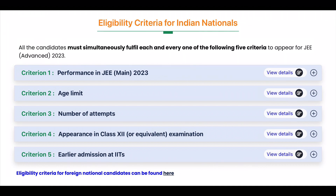The cutoff for JEE Mains to qualify for JEE Advanced: EWS is 70, General is 75, OBC is 73. Students meeting these cutoff scores are eligible to apply for JEE Advanced.